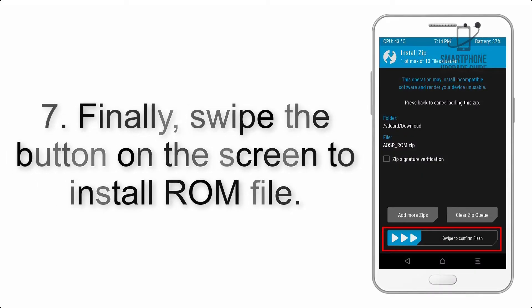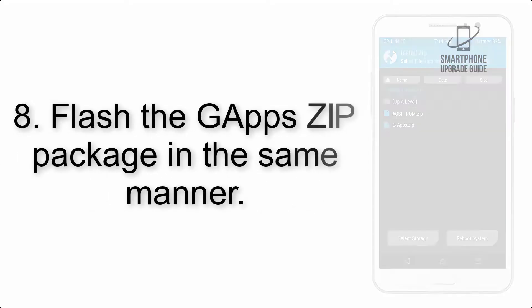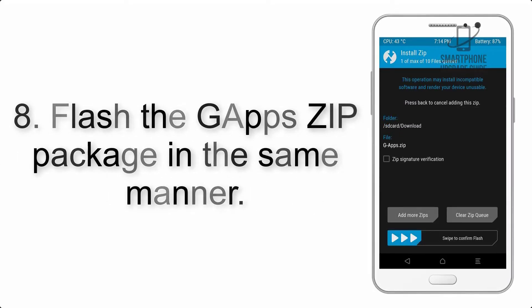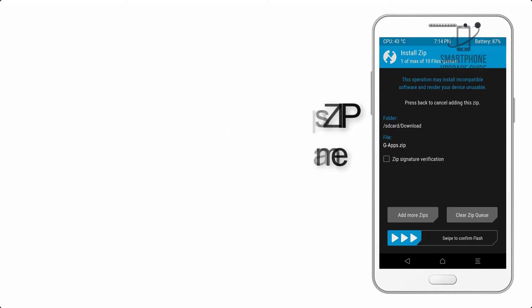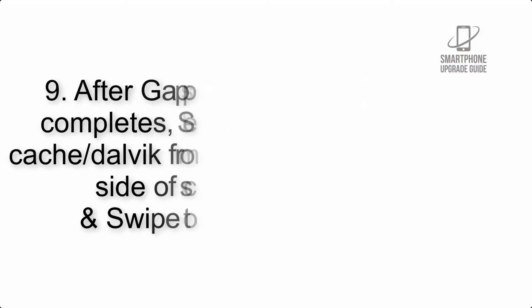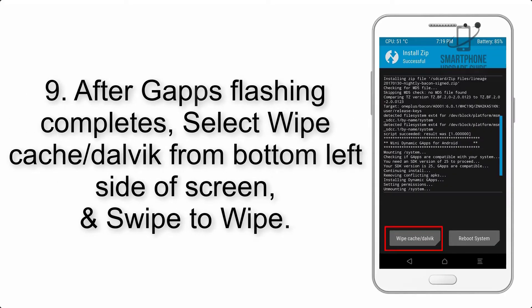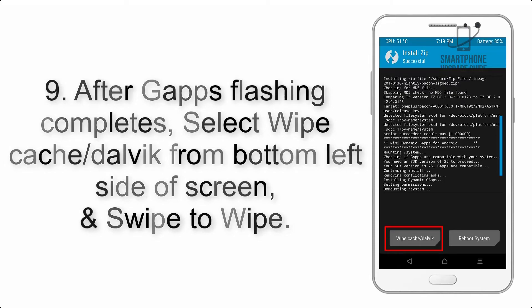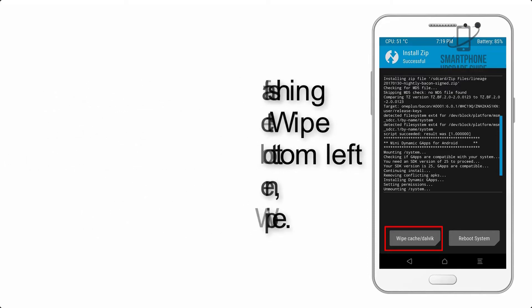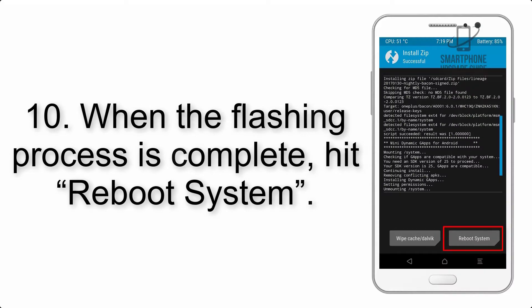Step 7: Swipe the button on the screen to install the ROM file. Step 8: Flash the gapps zip package in the same manner. Step 9: After gapps flashing completes, select Wipe Cache and Dalvik from the bottom left side of the screen and swipe to wipe.